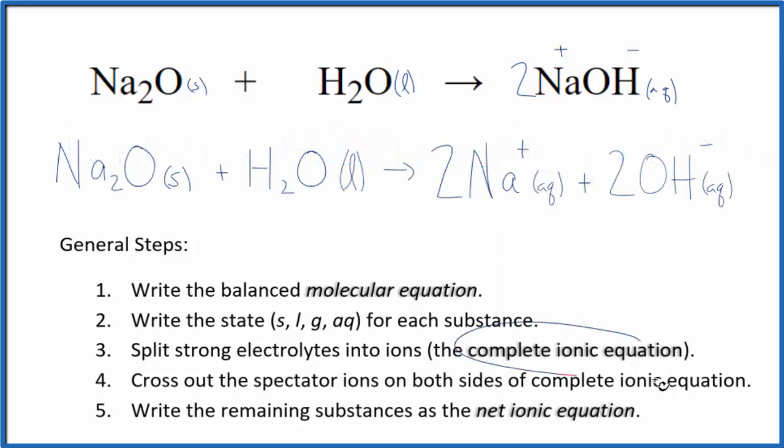So the complete ionic equation for Na2O plus H2O is right here. We can now cross out spectator ions. They're on both sides of the complete ionic equation. Thing is, there aren't any spectator ions. Everything on each side is unique. So the complete ionic equation, that's the same as the net ionic equation.